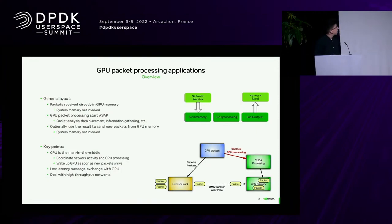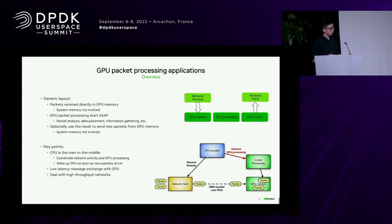As you can notice here, the CPU is kind of the man in the middle between the GPU and the network card, because the CPU has to synchronize the work of the network card in receiving packets. The network card will DMA the packets directly into the GPU memory.